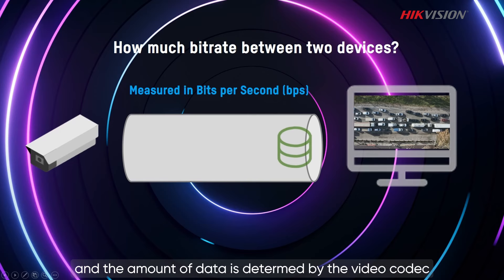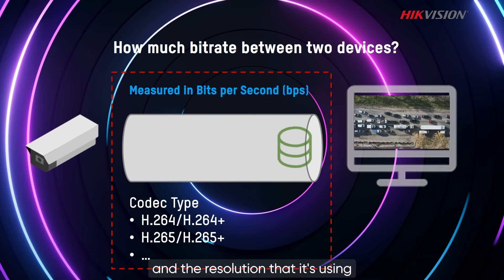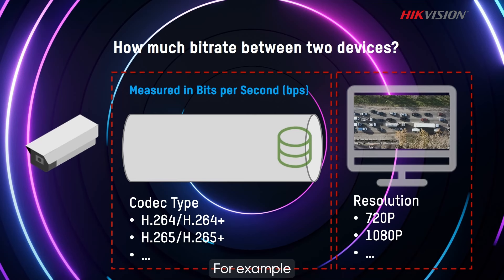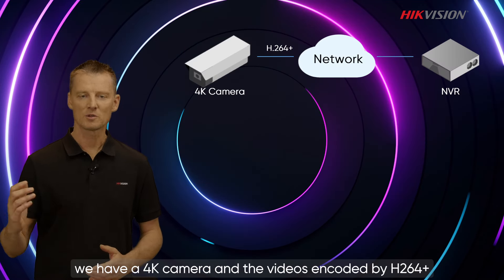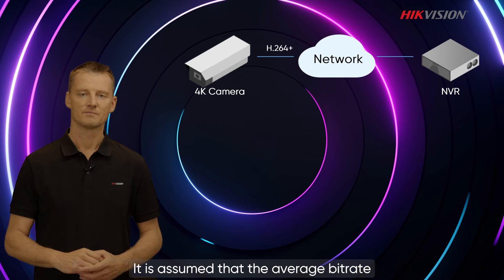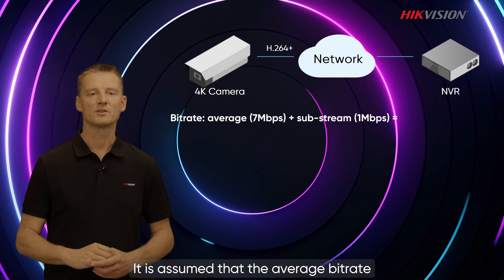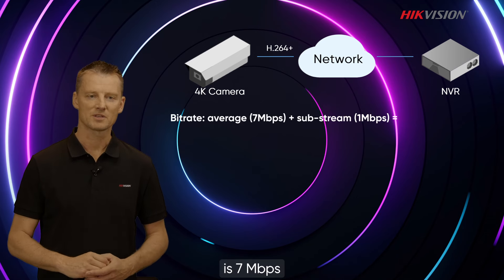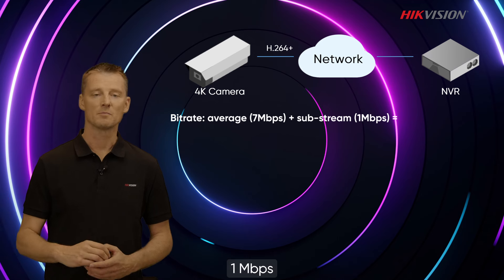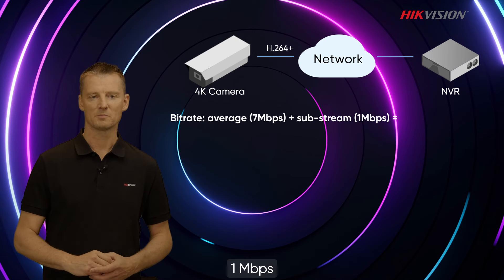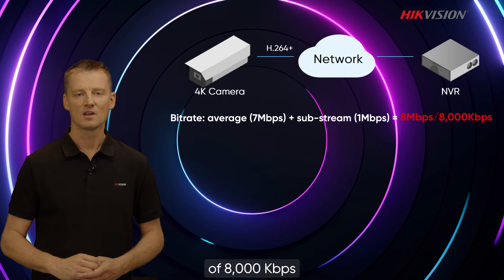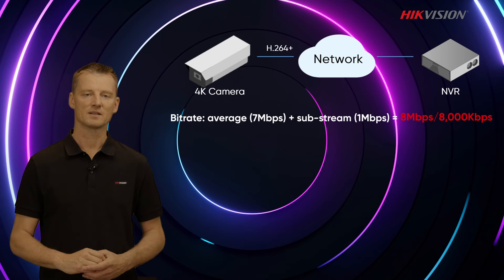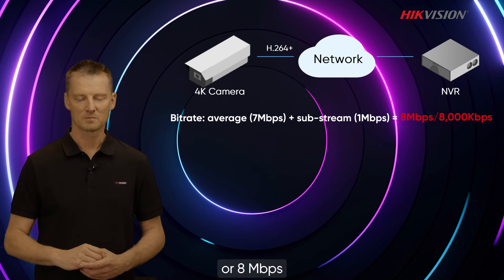All cameras send data, and the amount of data is determined by the video codec and the resolution that it is using. For example, we have a 4K camera and the video is encoded by H.264+. It is assumed that the average bitrate is 7 megabits per second and our substream is usually about 1 megabit per second, making it a total of 8,000 kilobits per second, or 8 megabits per second.